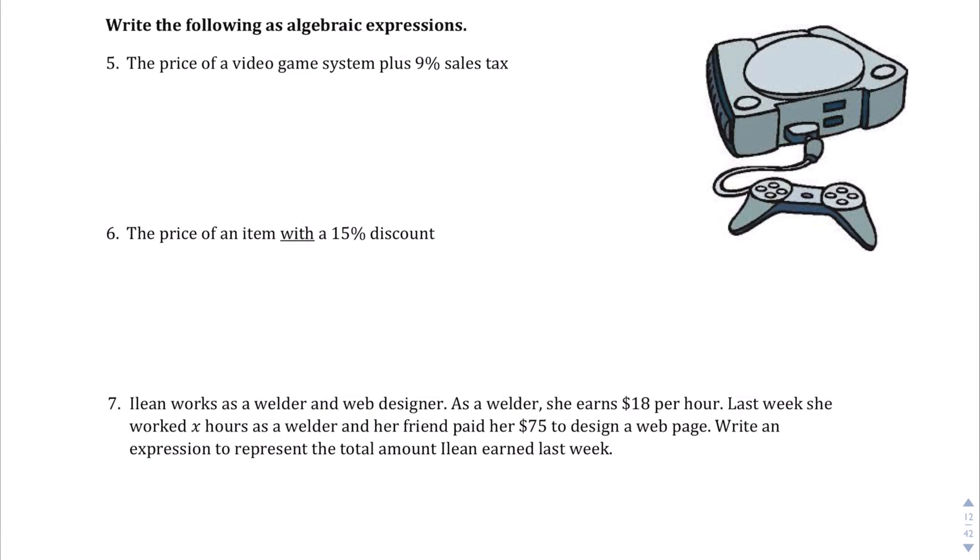Question number 5, we are asked to write the following as algebraic expressions. The price of a video game plus a 9% sales tax. So if we are to use the examples from the previous page, let's use P to be the price of a video game plus a 9% sales tax on top of that price. So the way we calculate that is to do P plus 0.09P. And then when we simplify that, because it's 1P plus 0.09P, we should end up with 1.09P to be the price of a video game plus a 9% sales tax. So we can do in one expression or one term what took two expressions on the left-hand side.